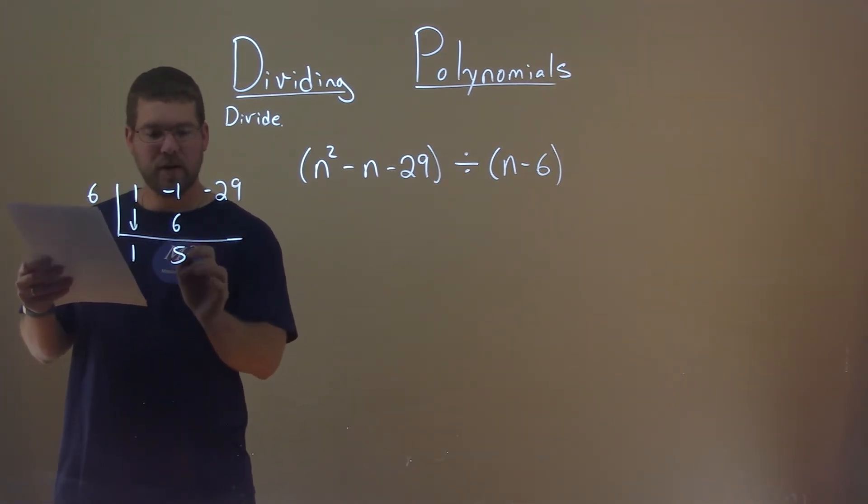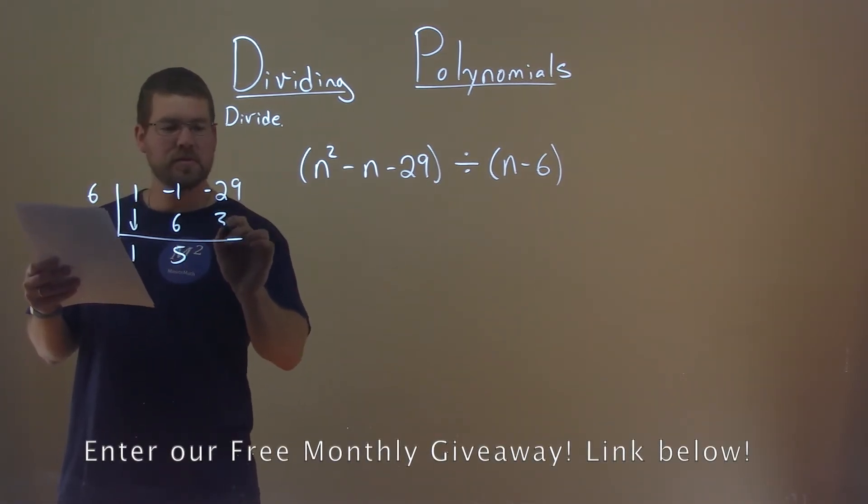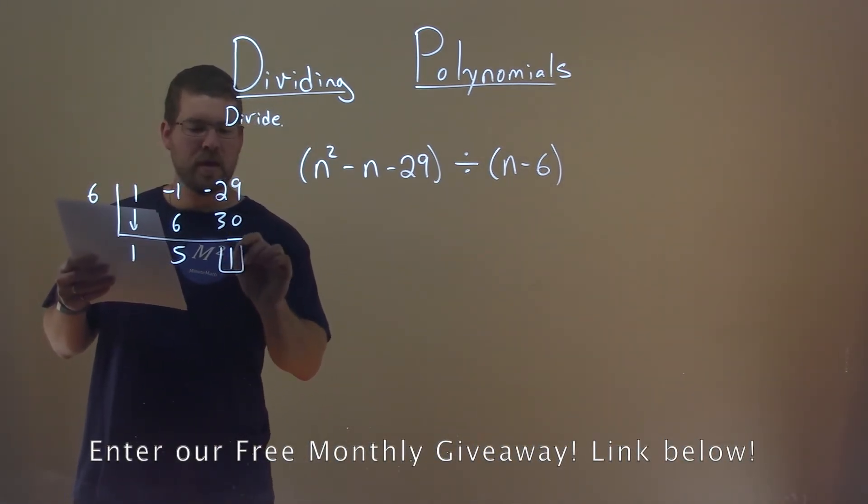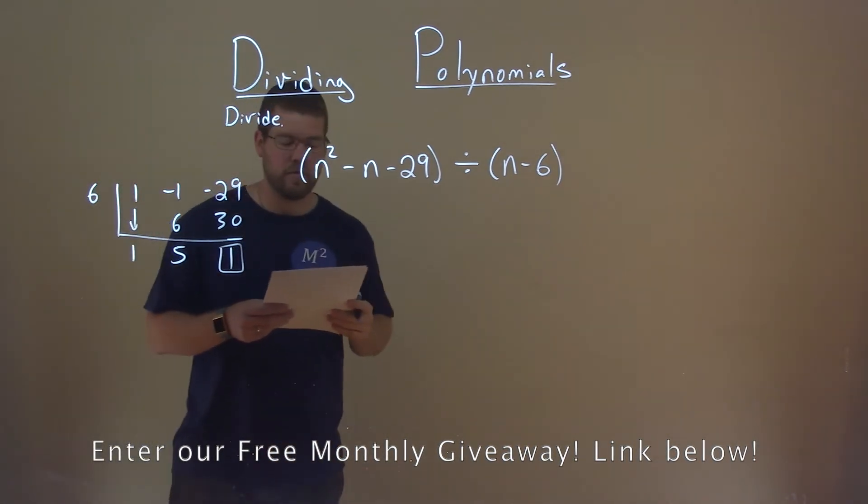6 times 5 now goes right here, which is 30, and negative 29 plus 30 is positive 1, and this positive 1 is our remainder.